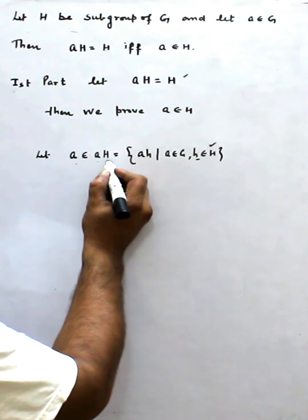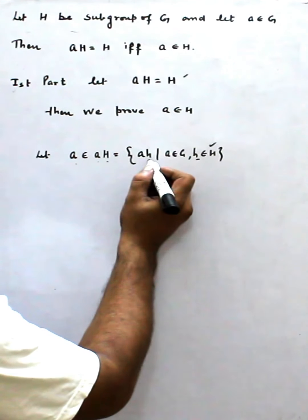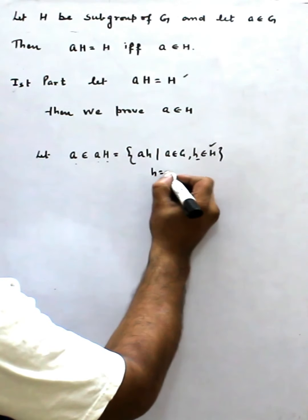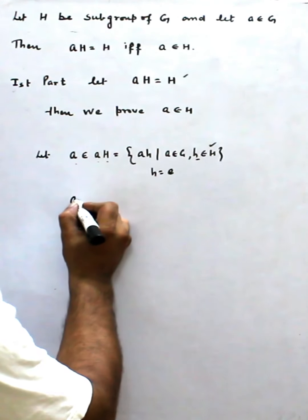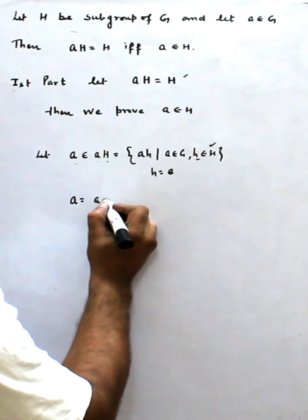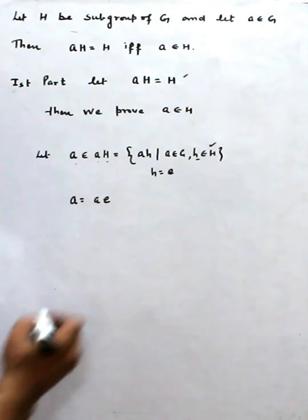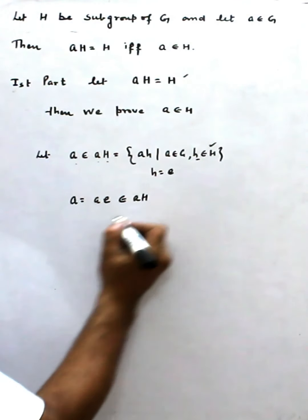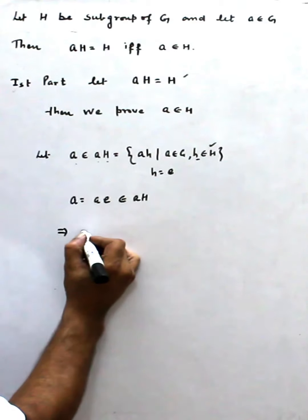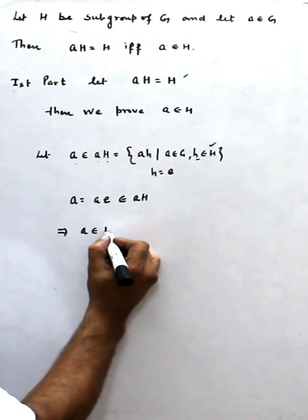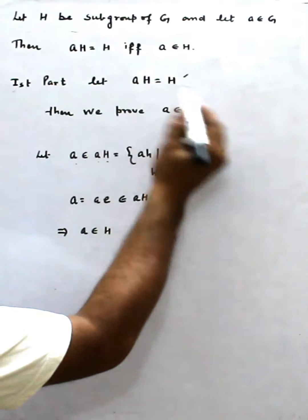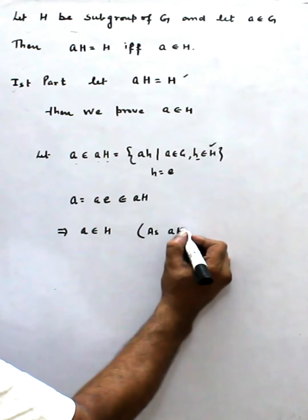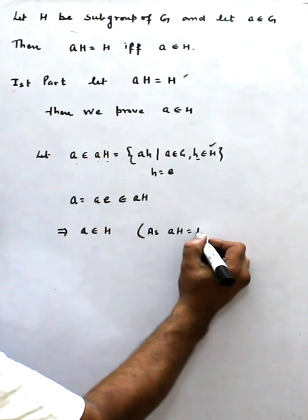So A belongs to AH. Why? Because H we can take as identity, that means we can write A as AE. So this belongs to AH, and this means A belongs to H, since AH is equal to H.